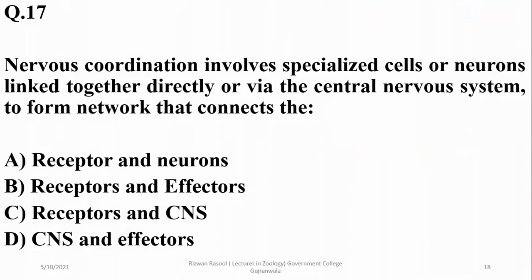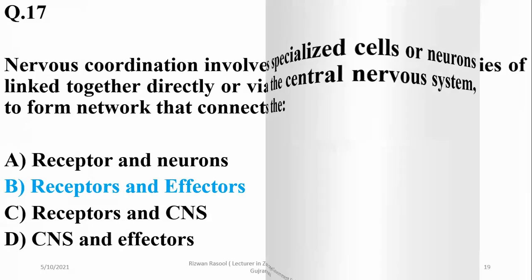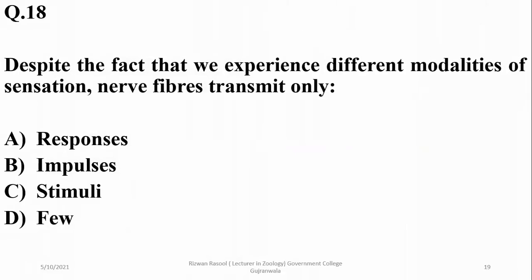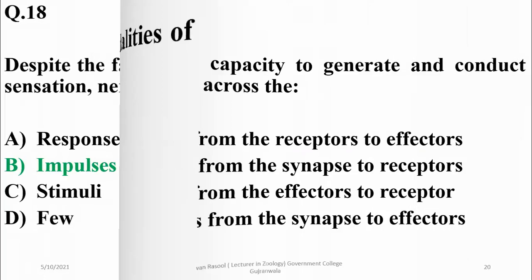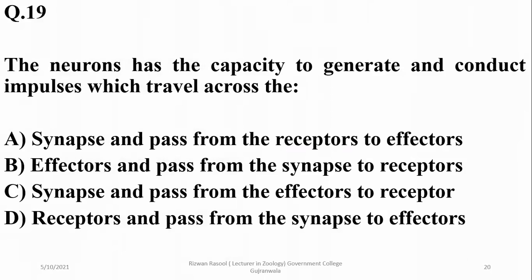Nervous coordination involves specialized cells or neurons linked together directly or via the central nervous system to form a network connecting receptors and effectors. Despite experiencing different modalities of sensation, nerve fibers transmit only their message in the form of impulses, so beta is correct.